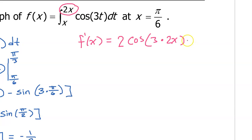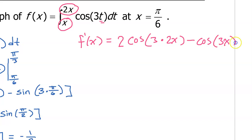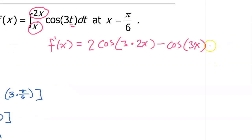Next we subtract. This time we will take the inner function, and instead of t, we will plug in the lower limit of integration. So instead of 3t, we will have 3x. Normally I would say let's multiply by the derivative of the lower limit of integration, but the derivative of x is just 1, so we don't need that.